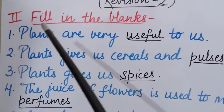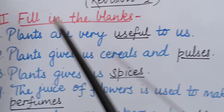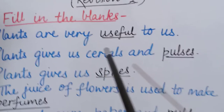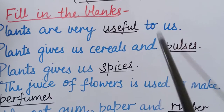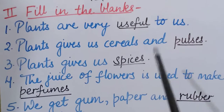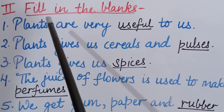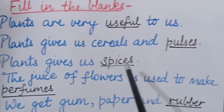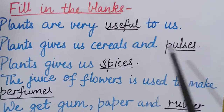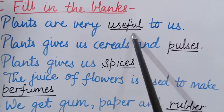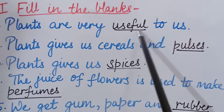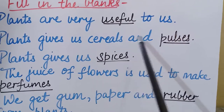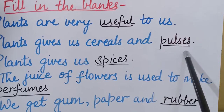Now coming to the second part — fill in the blanks. Again in this part I will explain with answers, but in the assignment I will not write the answers; you have to fill in the blanks on your own. So listen very carefully. The first fill in the blank is: plants are very blank to us — plants are very useful to us. Spelling of useful: U-S-E-F-U-L. Second: plants give us cereals and pulses — P-U-L-S-E-S, pulses.